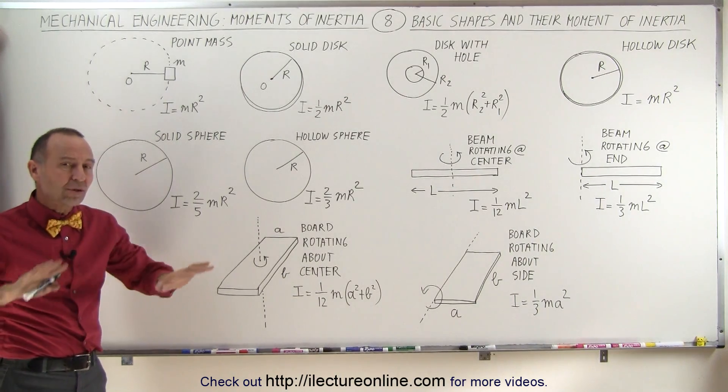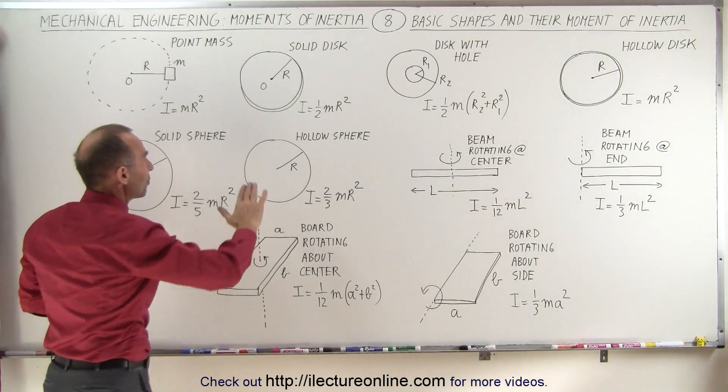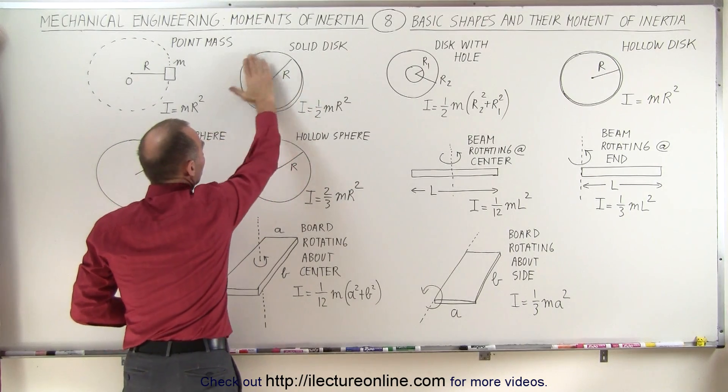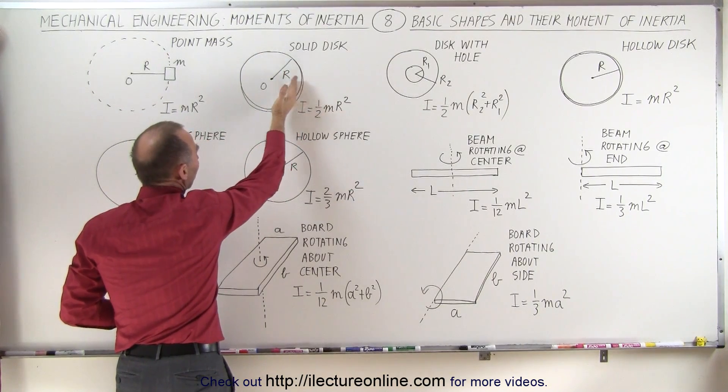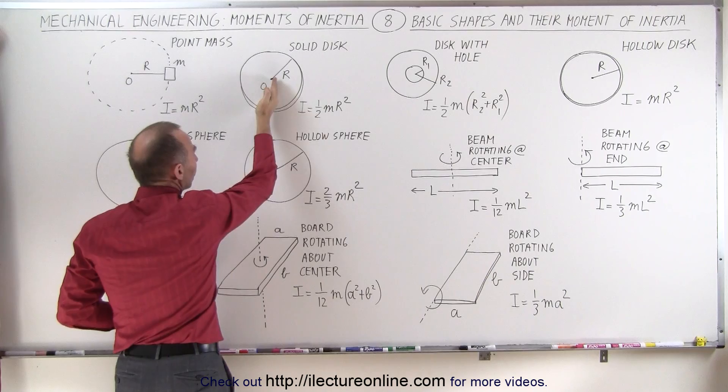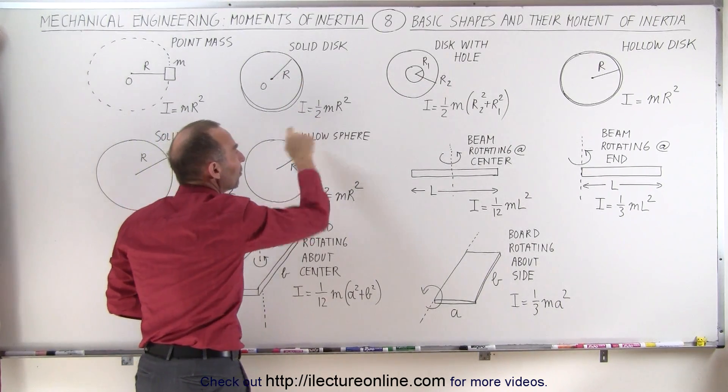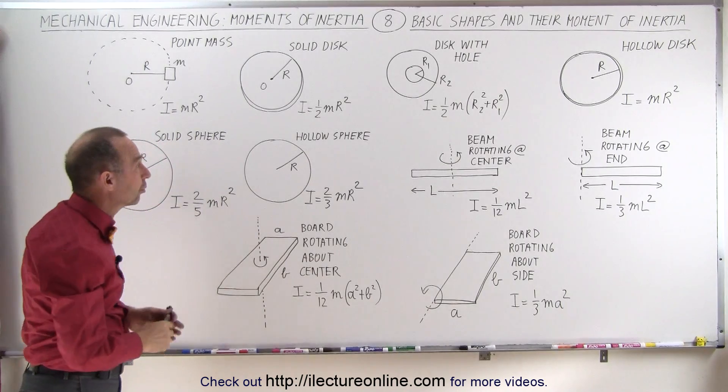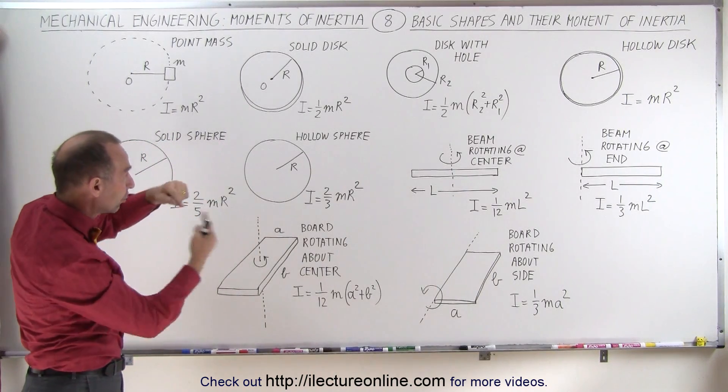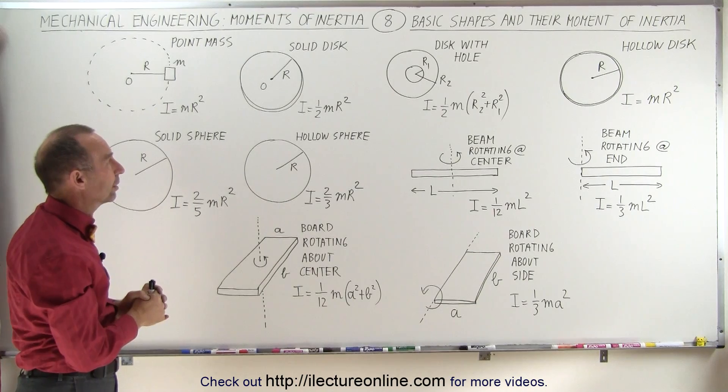But if the mass is distributed differently, here we have a solid disk where the mass is distributed throughout. Some mass is close to the point of rotation, some is far away. You can see it has a different coefficient. The moment of inertia of a solid disk rotating about its center is 1/2 mR squared.